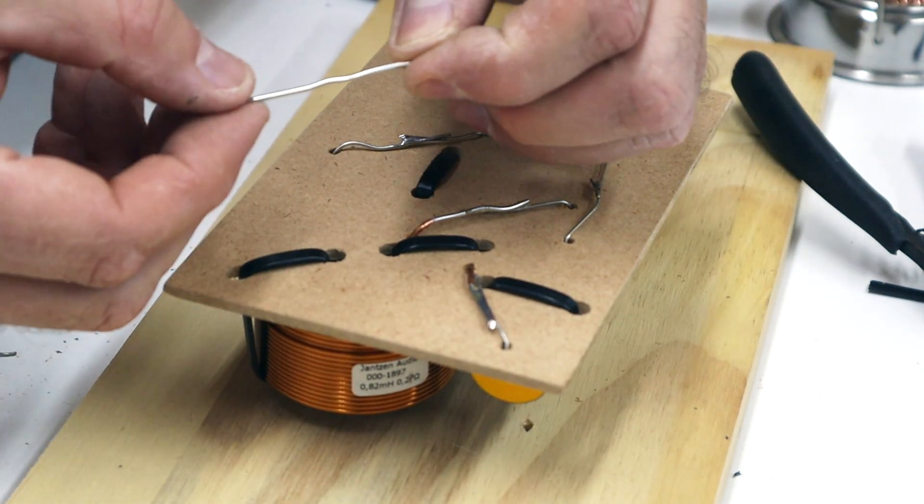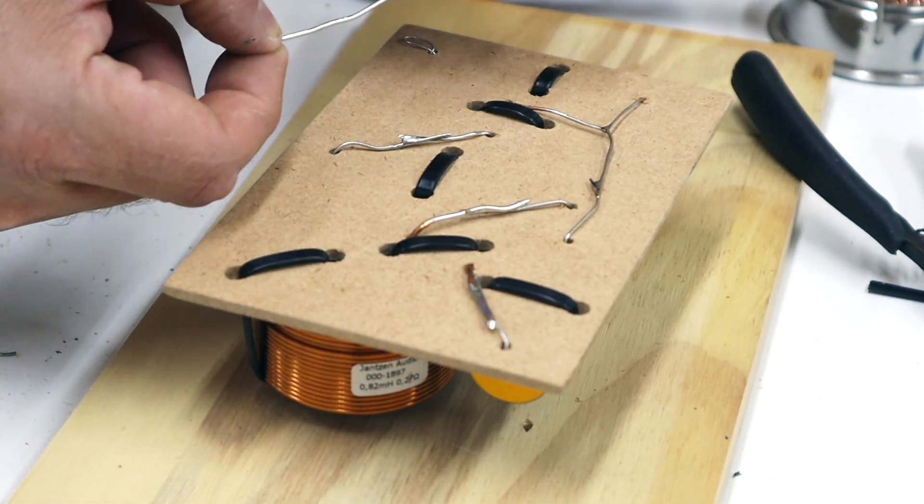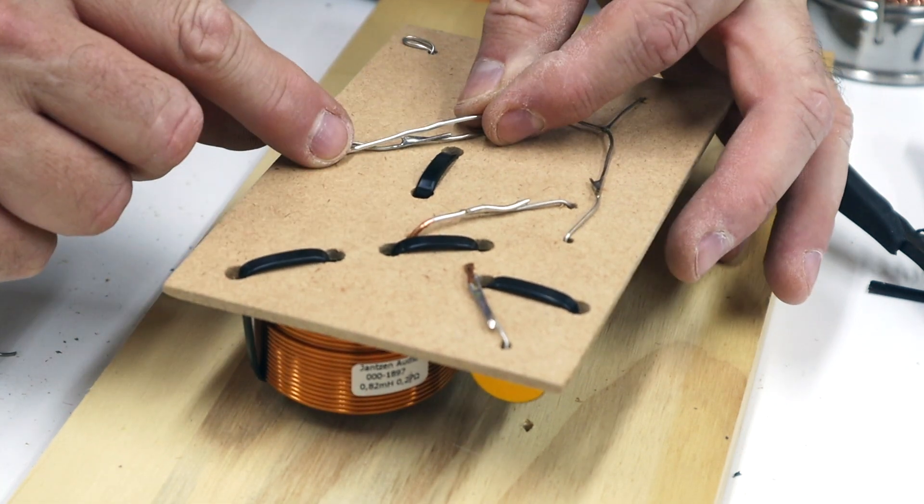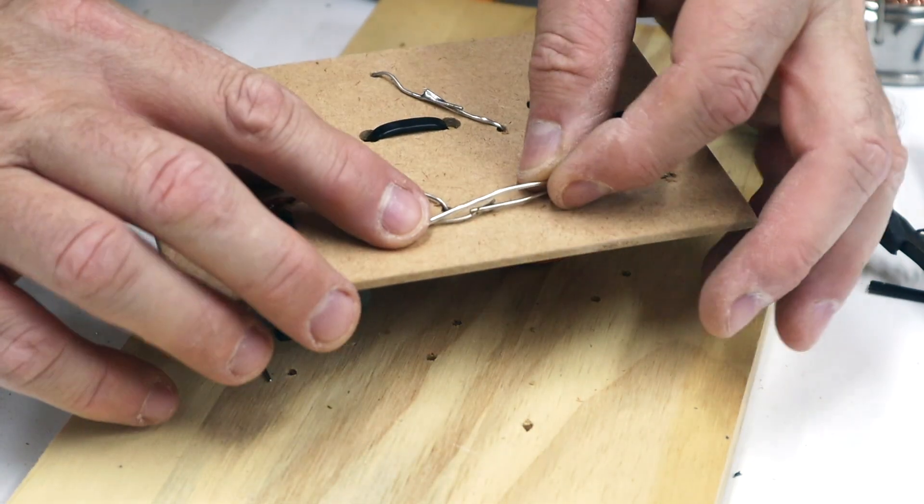Sometimes a component lead will be too short to reach and you will need to extend the lead with some speaker wire. You can also use the wire that you trim off the excess component leads.